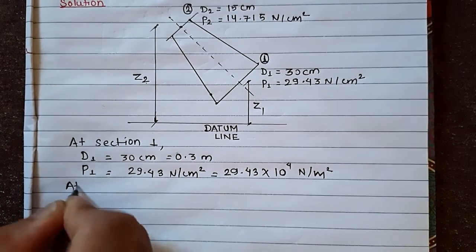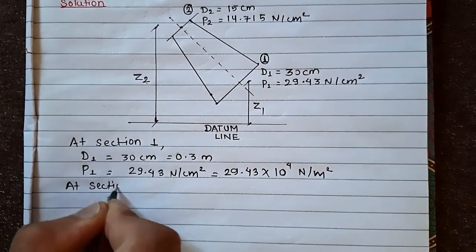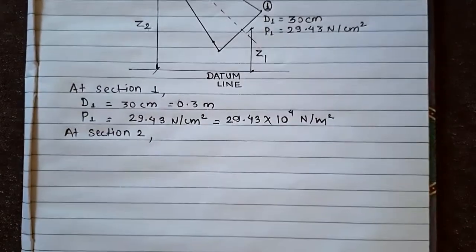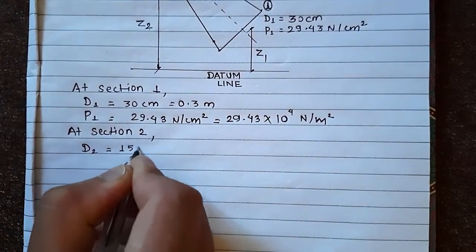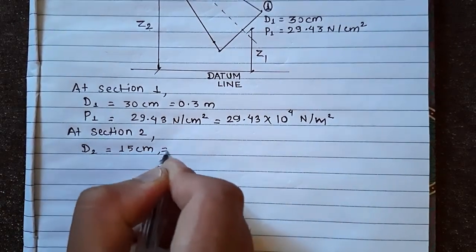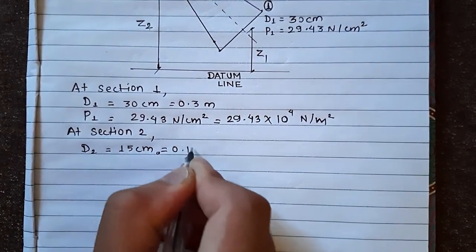At section 2, D₂ is 15 cm, this is equal to 0.15 meter,